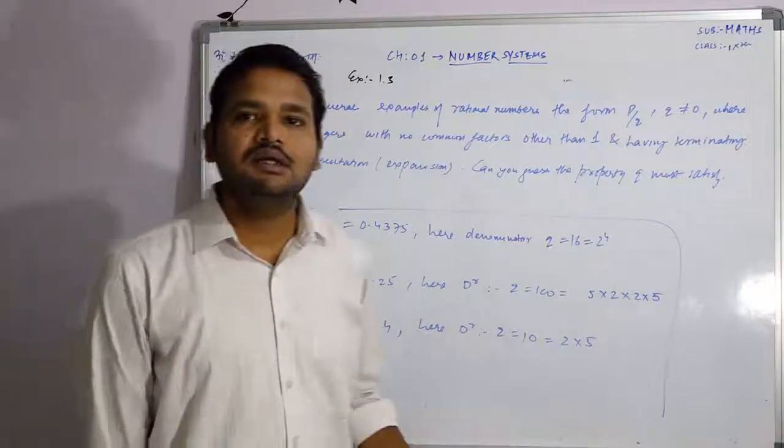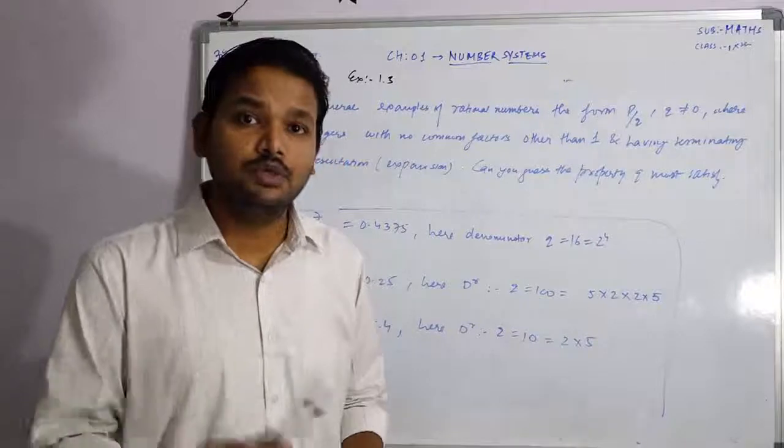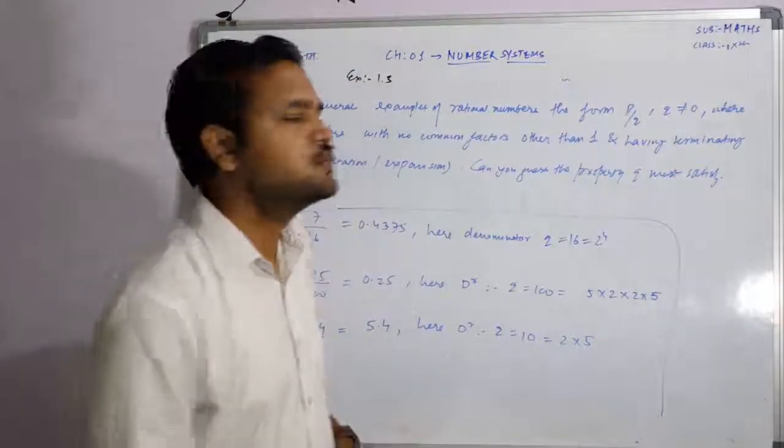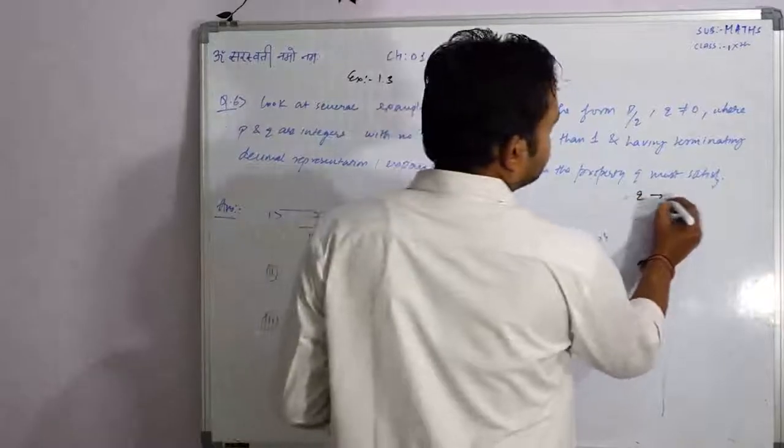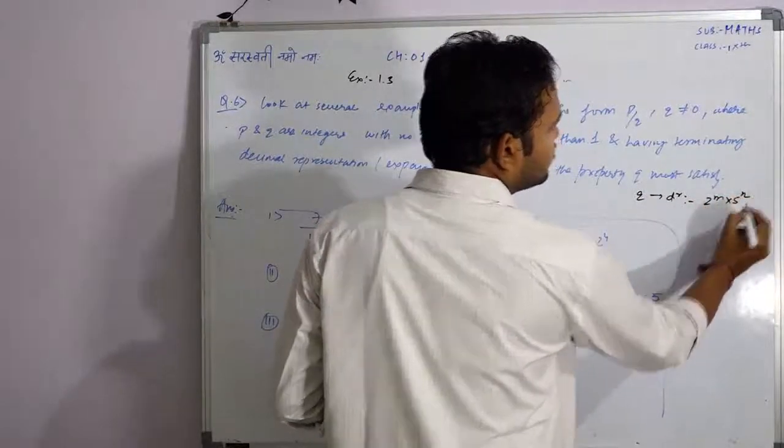If you want to know that if the rational number P by Q in the form where Q not equals to 0, then Q has a particular property which is the denominator, the whole number of 2 raised to m into 5 raised to n in the form of expression.